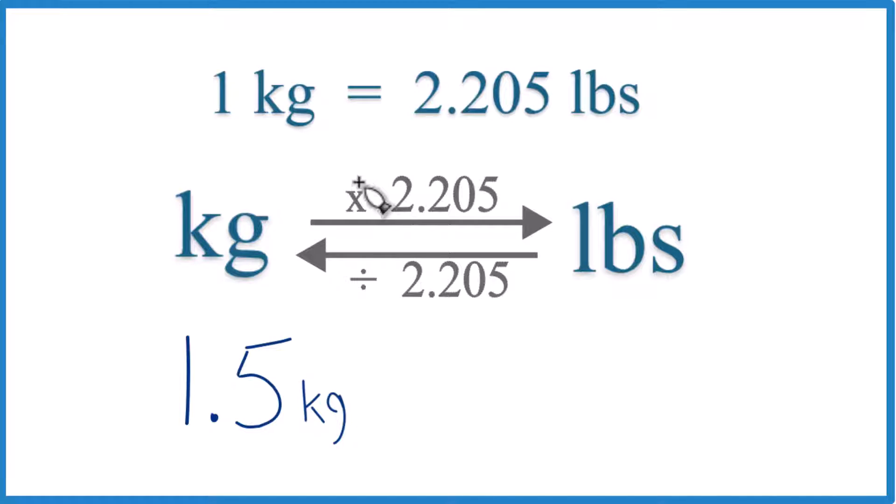We call this a conversion factor. When we're converting from kilograms to pounds or pounds to kilograms, we can use our conversion factor here. In this case, we have 1.5 kilograms. We want to get that to pounds. So what we're going to do, kilograms to pounds, we're going to multiply by 2.205, like this here.